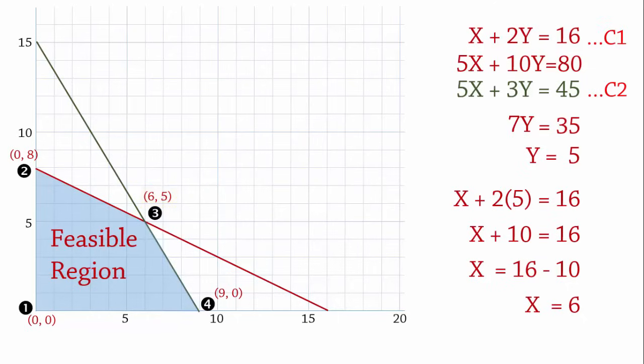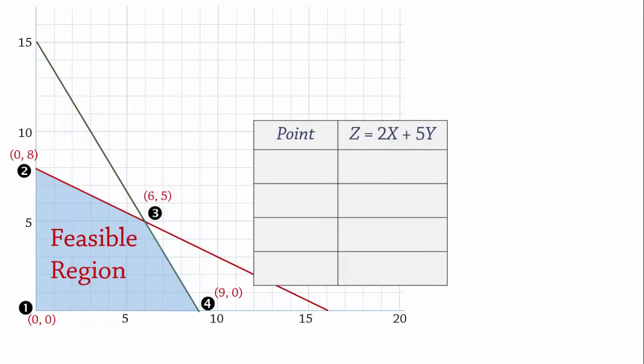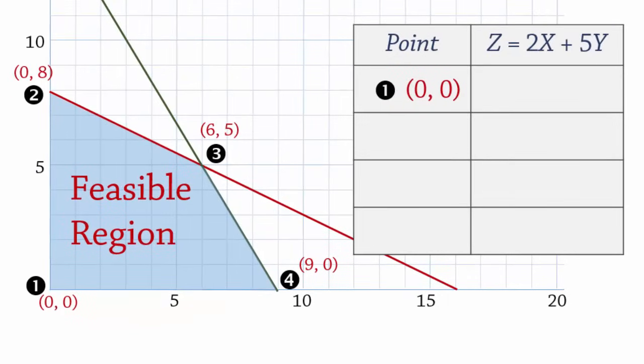Next we determine the optimal solution point by finding the corner point that gives the best value of the objective function. The objective function was to maximize 2x plus 5y. As you can see here, the objective function or its value is sometimes represented with z. So now, the xy coordinates at point 1 are 0, 0. And substituting that in the objective function gives 2 times 0 plus 5 times 0 which equals 0.